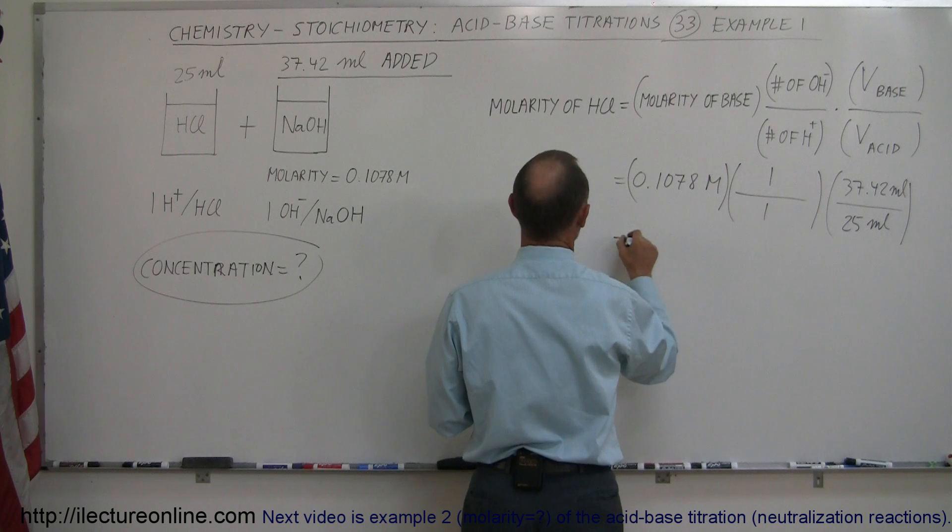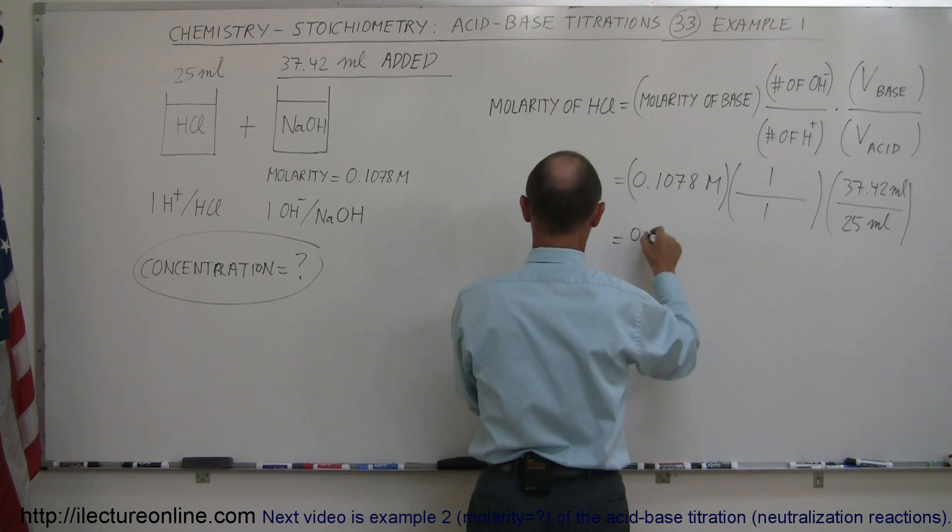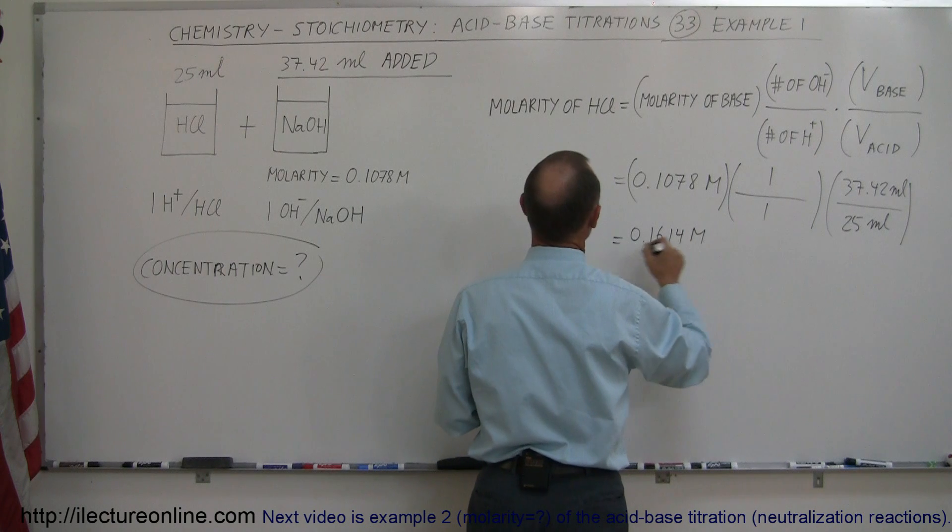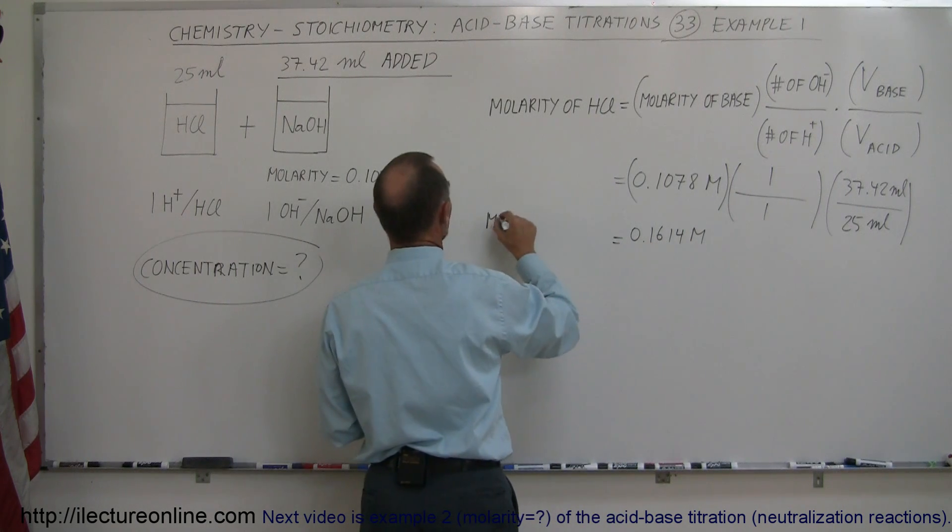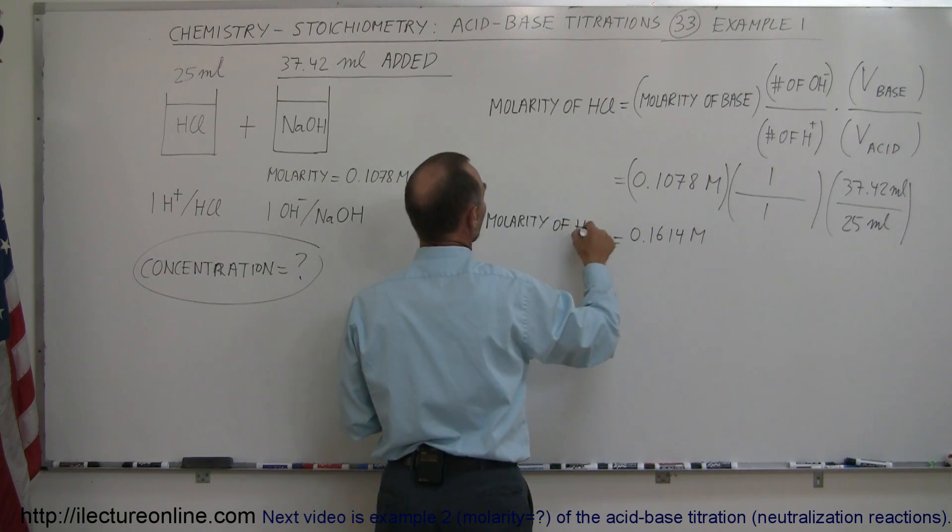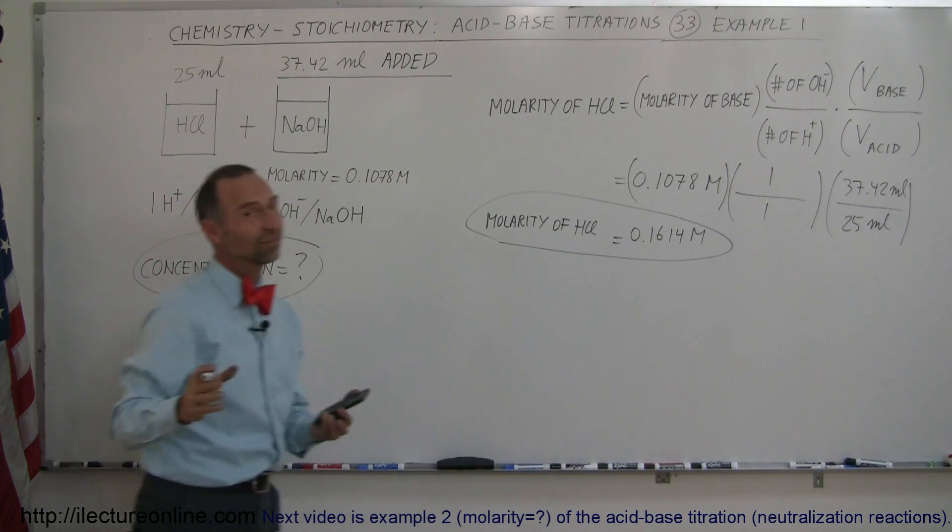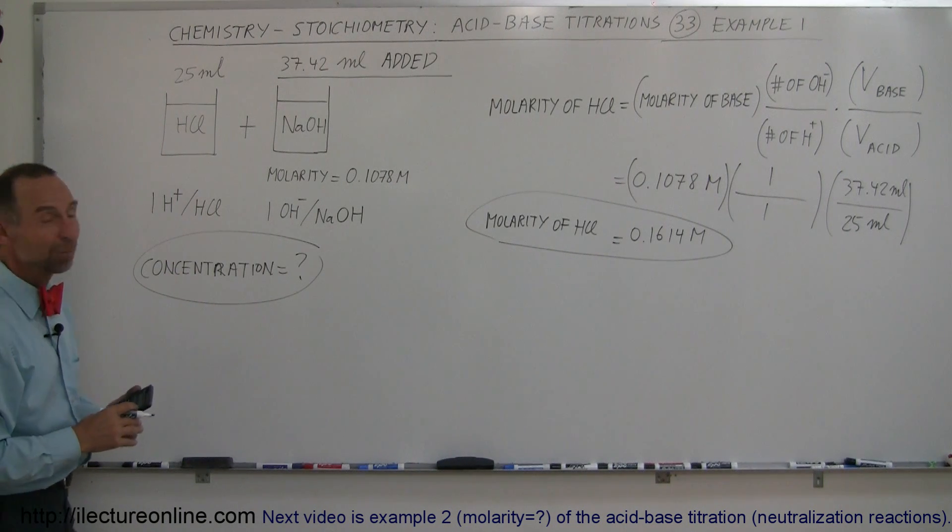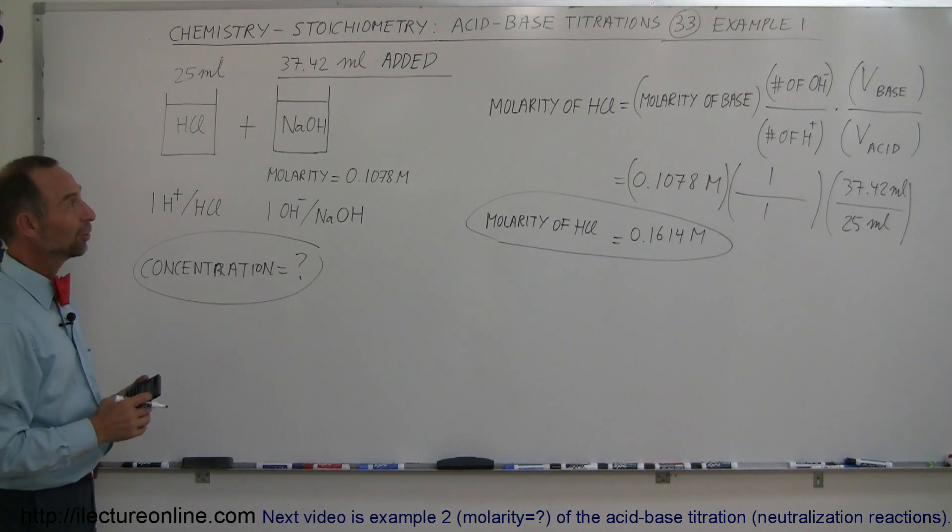of the hydrochloric acid is equal to 0.1614 molar. So, that is then the molarity of the hydrochloric acid. And that's how you do that. So, you see, it's not that difficult. Not if you follow that simple equation right there. That's how you do that.